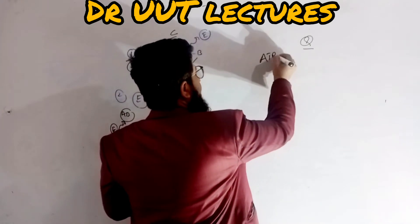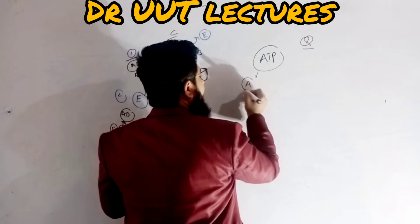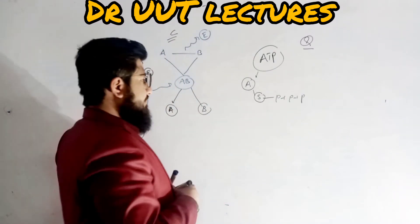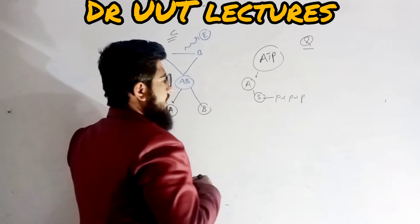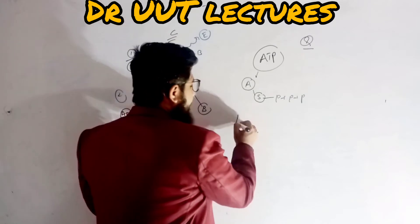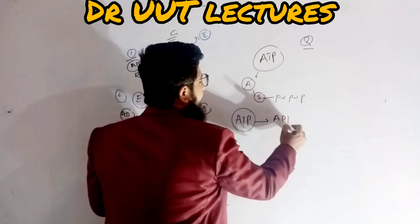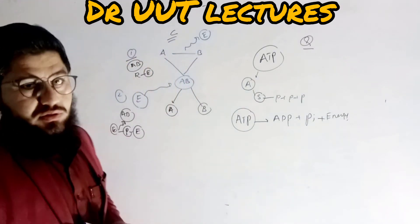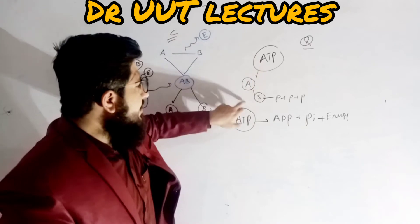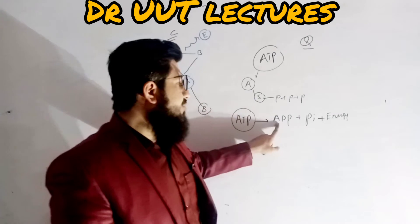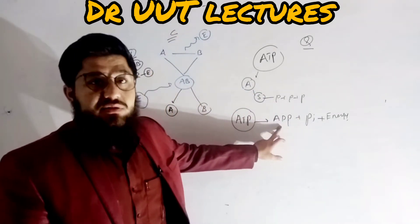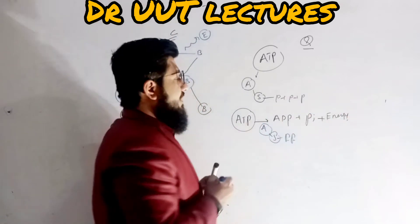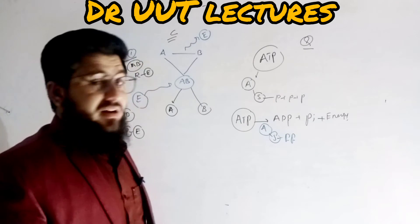Now, the question relates to ATP. In ATP, we have adenosine attached with a sugar, which is further attached with three inorganic phosphates. Whenever there is a requirement of energy, ATP is supposed to break into ADP plus inorganic phosphate plus energy — meaning energy is produced. In ATP we have three inorganic phosphates; when energy is needed, ATP is converted into ADP and inorganic phosphate. ADP means two phosphates — so one phosphate is removed along with the energy.